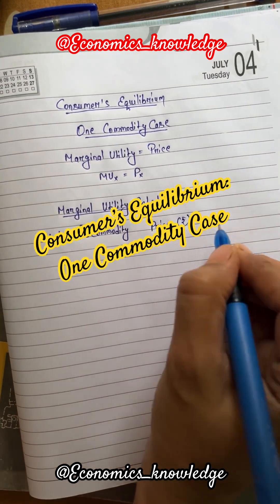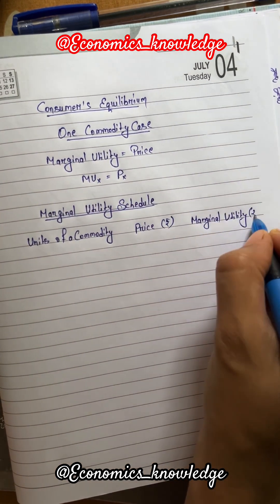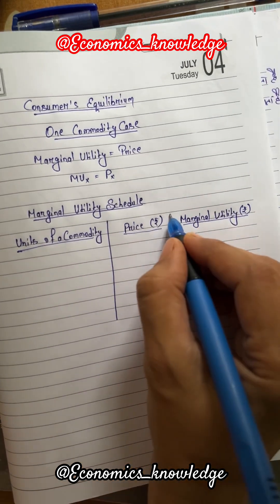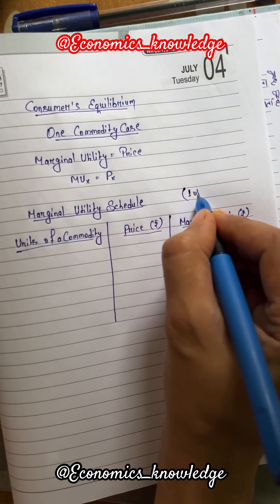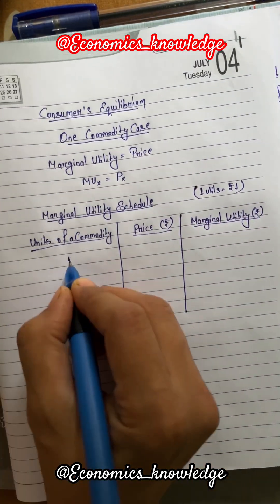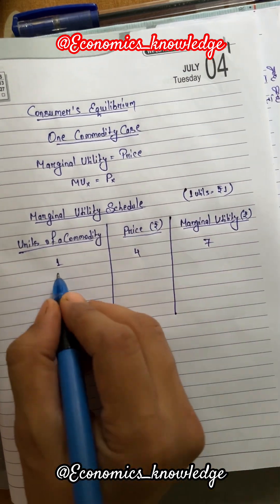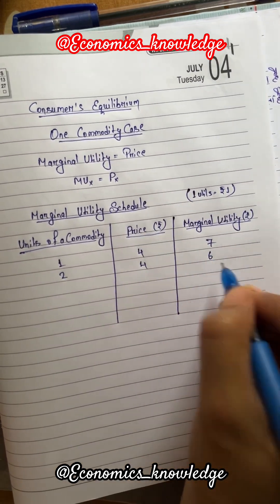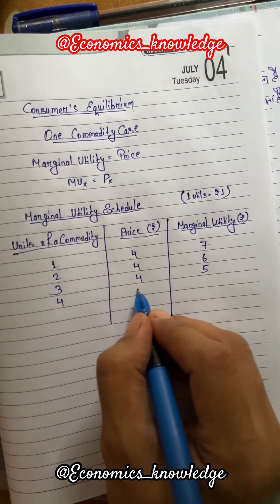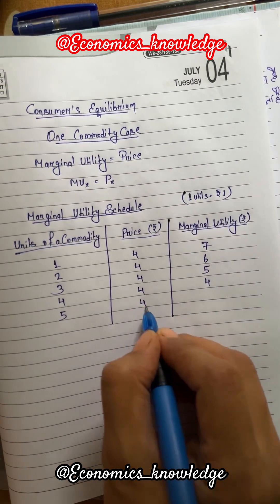Let us understand this with the help of a table. Units of a commodity, price, and marginal utility are given. For simplicity, it is assumed that one util equals rupees one. When a consumer consumes the first unit, he gets seven utils worth rupees seven, but has to pay only rupees four for it.